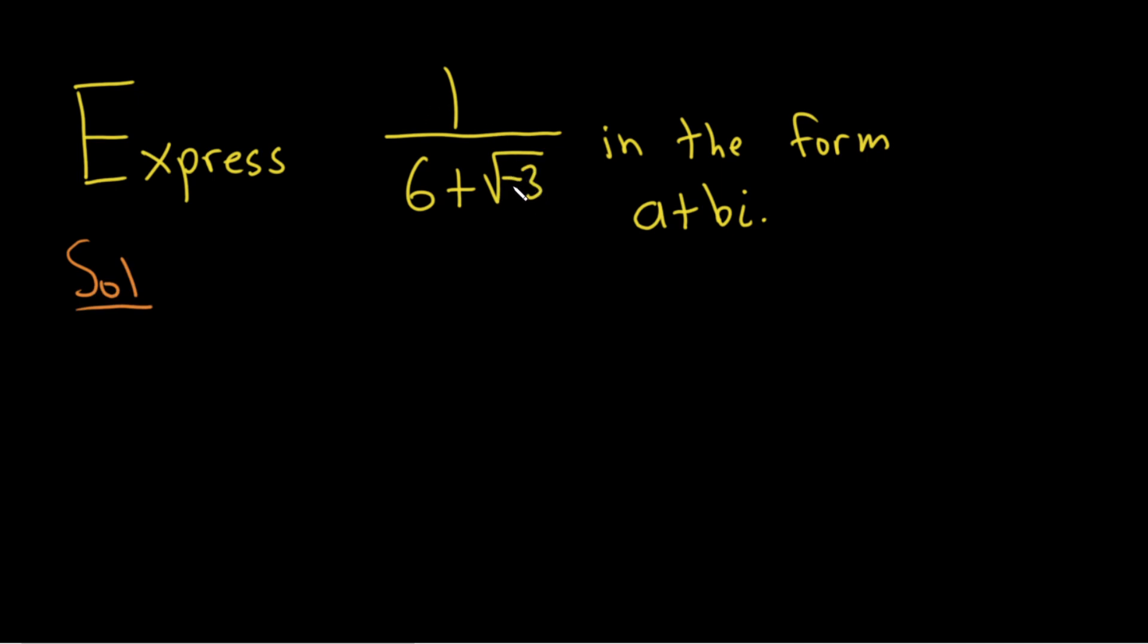So we'll start by dealing with this square root of negative 3. In general, if you have the square root of negative a, and a is a positive number, you can write this as i square root of a.